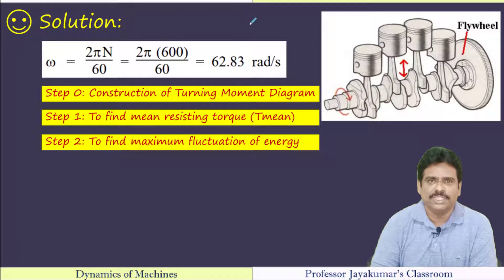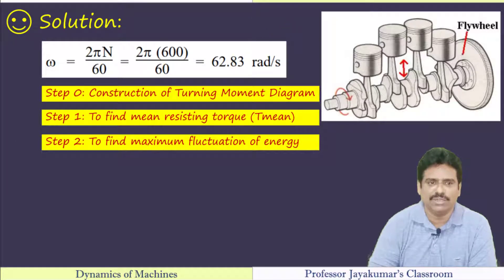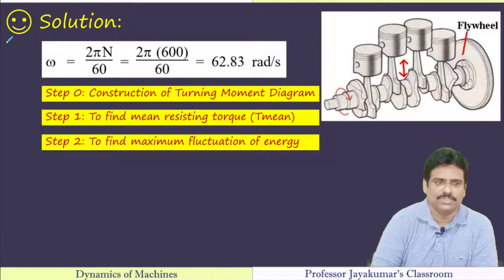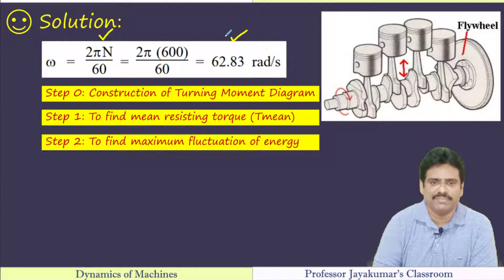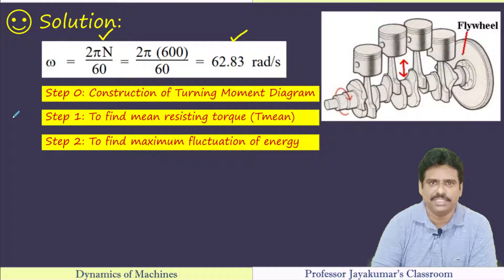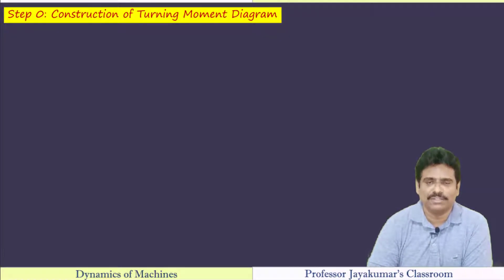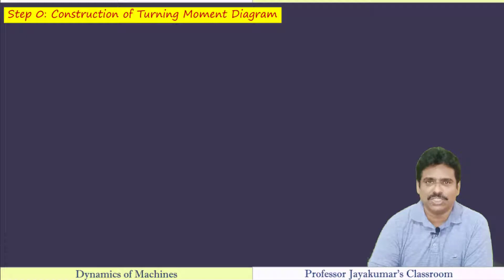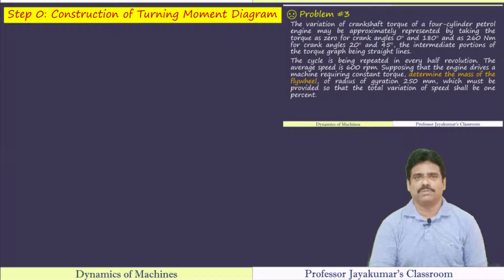We are given the RPM, so we can immediately determine angular velocity of the flywheel. Omega equals 2π·n/60. Substituting, we find omega = 62.83 radians per second.